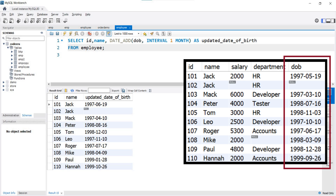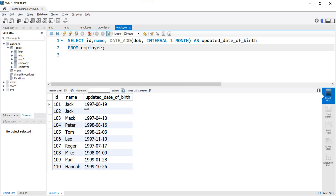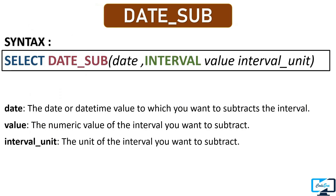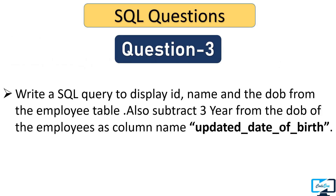You can also subtract a time or date interval from a date or timestamp using the DATE_SUB function. Instead of writing DATE_ADD you just write DATE_SUB and the rest of the query remains the same. Here is a question based on this function: write a SQL query to display id, name, and date of birth from the employee table, and also subtract 3 years from the date of birth of the employees as 'updated_date_of_birth'.